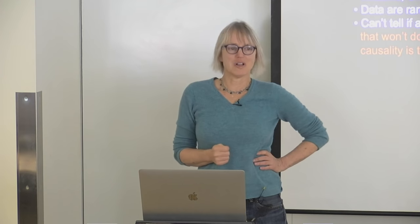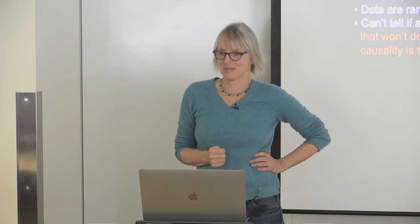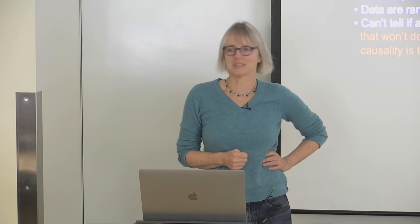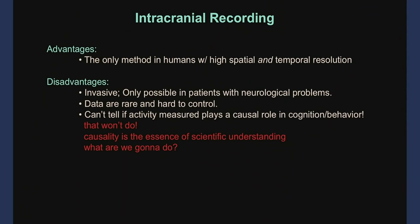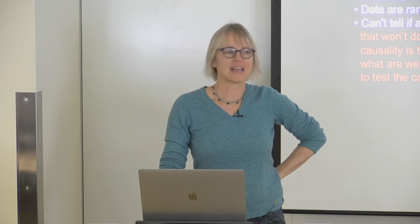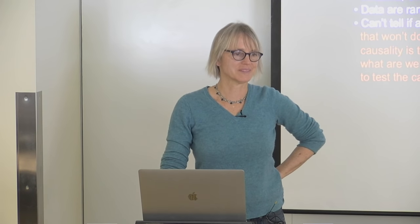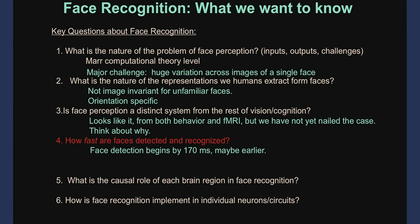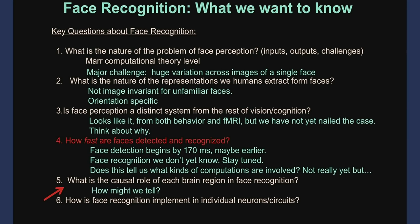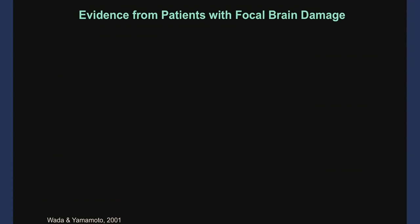How does this take us beyond functional MRI? It implies you need that bit to recognize faces. But it also says you don't need it for recognizing objects. This is actually really strong evidence that that bit of brain is very specialized — and necessary — for face recognition. This patient has prosopagnosia: a selective deficit in face recognition. And people with prosopagnosia have no problem knowing that a face is a face — they just don't know who it is.